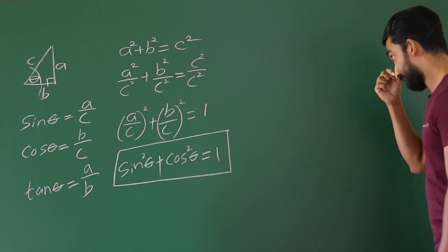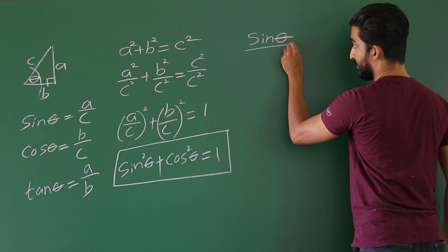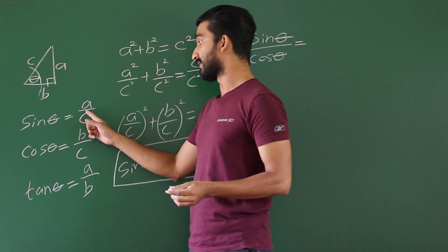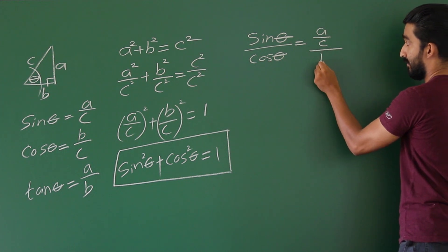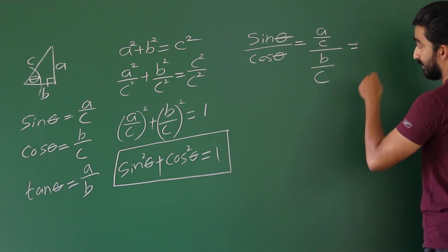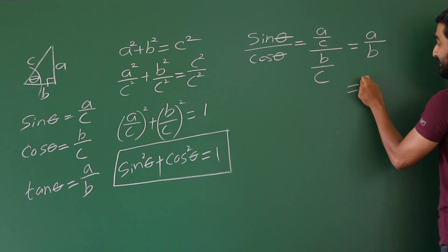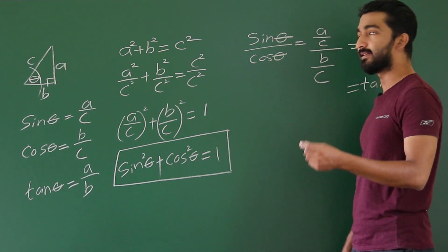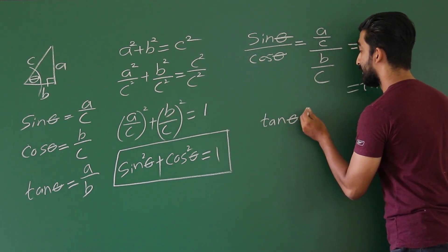Moving on, we divide sin theta by cos theta. Now sin theta means a/c and cos theta means b/c. So a/c divided by b/c — simplifying the fractions — gives us a/b, which is tan theta. So we have our next basic trigonometric identity: tan θ = sin θ / cos θ.